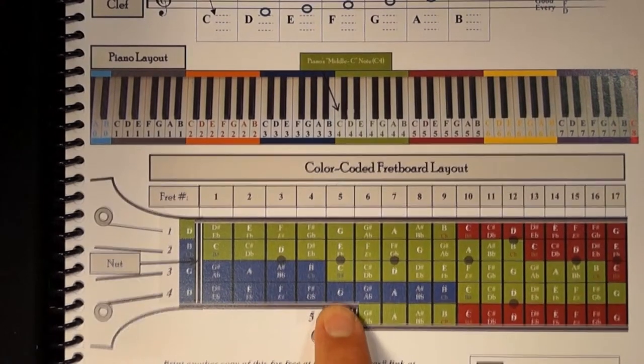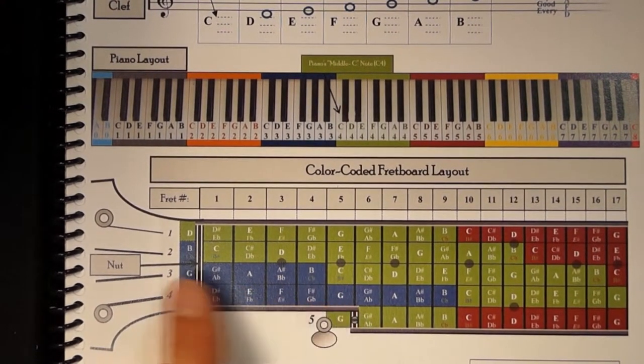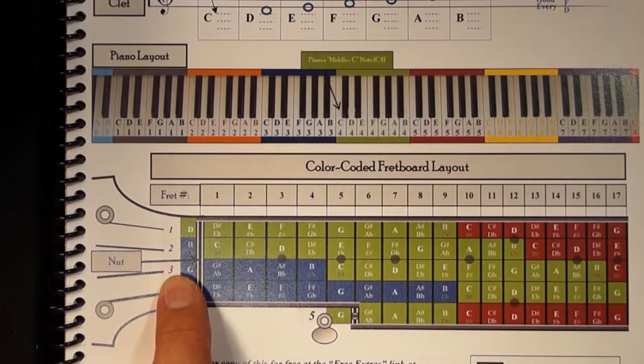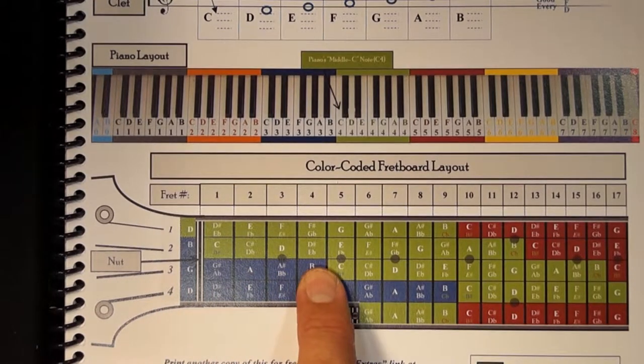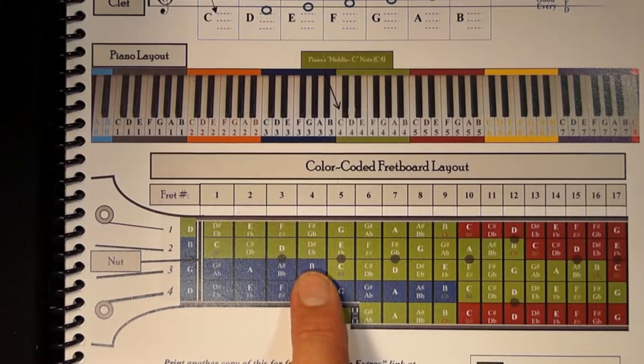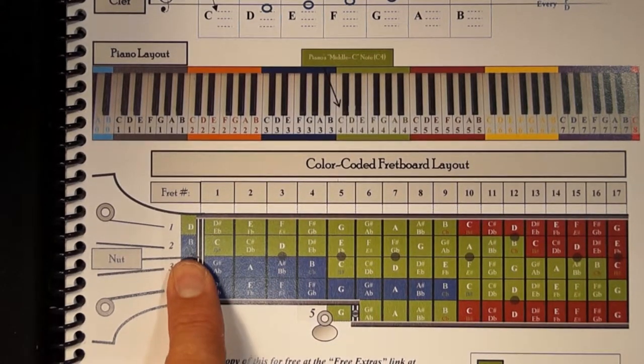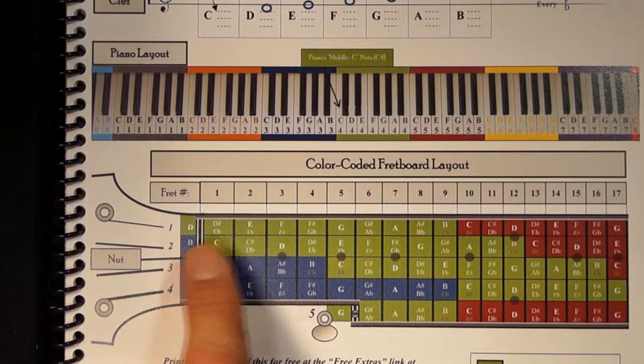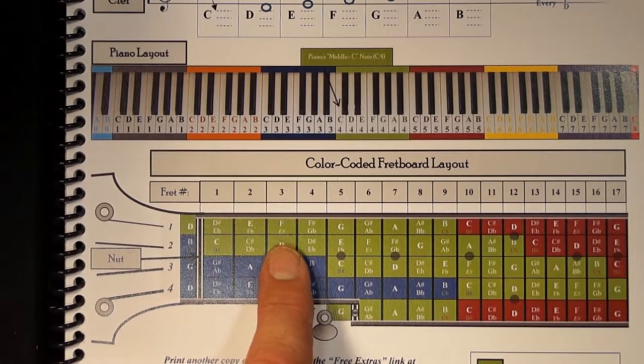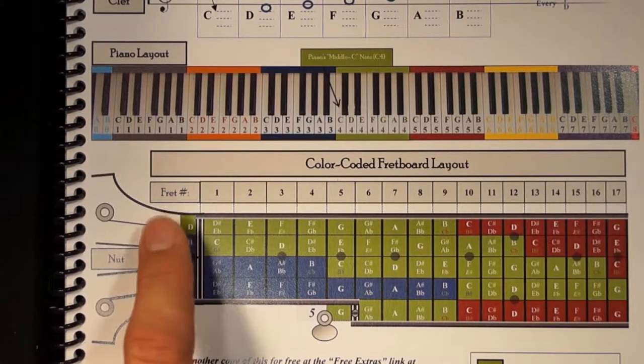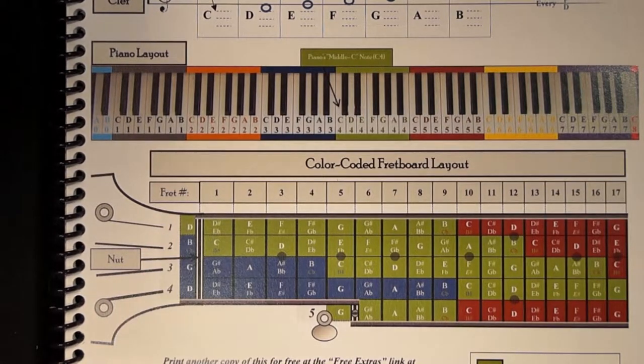I can see that this G note fifth fret of the fourth string matches the open third string, and then the fourth fret of the three string is a B note that matches the second string open, and then the D note on the second string third fret matches the D note on the open first string.